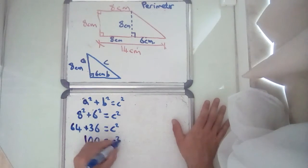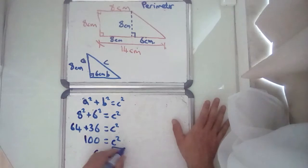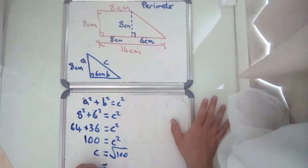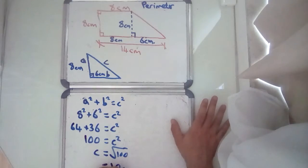So, C must equal the square root of 100, don't worry about negative numbers in this case. The square root of 100 is 10 centimetres.